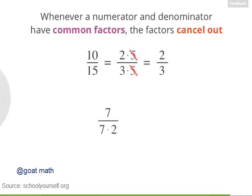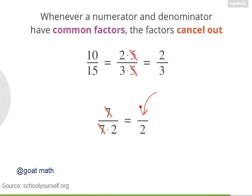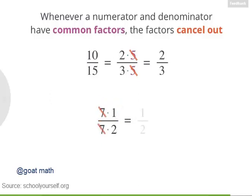Now, one last thing. Suppose you have a fraction that looks like this: 7 over 7 times 2. It would be nice to cancel out the 7s, but it looks like we don't have a numerator anymore — we're left with nothing over 2. Well, that's not right. 7 is really the same thing as 7 times 1. And now, if we cancel out the common factors, we're left with 1 half. So, whenever you cancel out a numerator or a denominator to the point where it's all crossed out, that means you're really left with a 1.